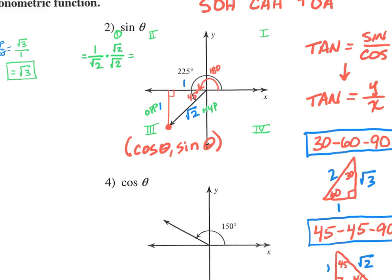Multiply across. 1 times root 2 is root 2. Square root 2 times square root 2 is just 2. And that would be our answer: root 2 over 2.